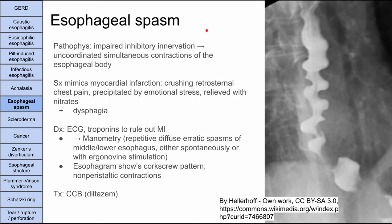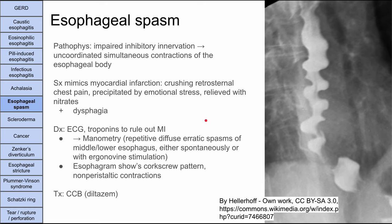Next is esophageal spasm. The pathophysiology is impaired inhibitory innervation, resulting in uncoordinated simultaneous contractions of the esophageal body. Symptoms mimic myocardial infarction — patients complain of crushing retrosternal chest pain that can be precipitated by stress and can improve with nitrates. The key differentiator is that patients with esophageal spasm also have dysphagia. To diagnose, first rule out MI with an EKG and troponins. Then do manometry, which shows diffuse erratic spasms of the middle and lower esophagus.